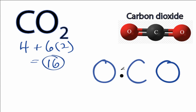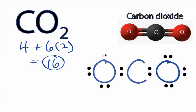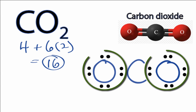We'll put two electrons between each pair of atoms to form chemical bonds, then go around the outside to fill octets. At this point we've used all 16 valence electrons, and both of the oxygens have eight valence electrons, so their octets are full.